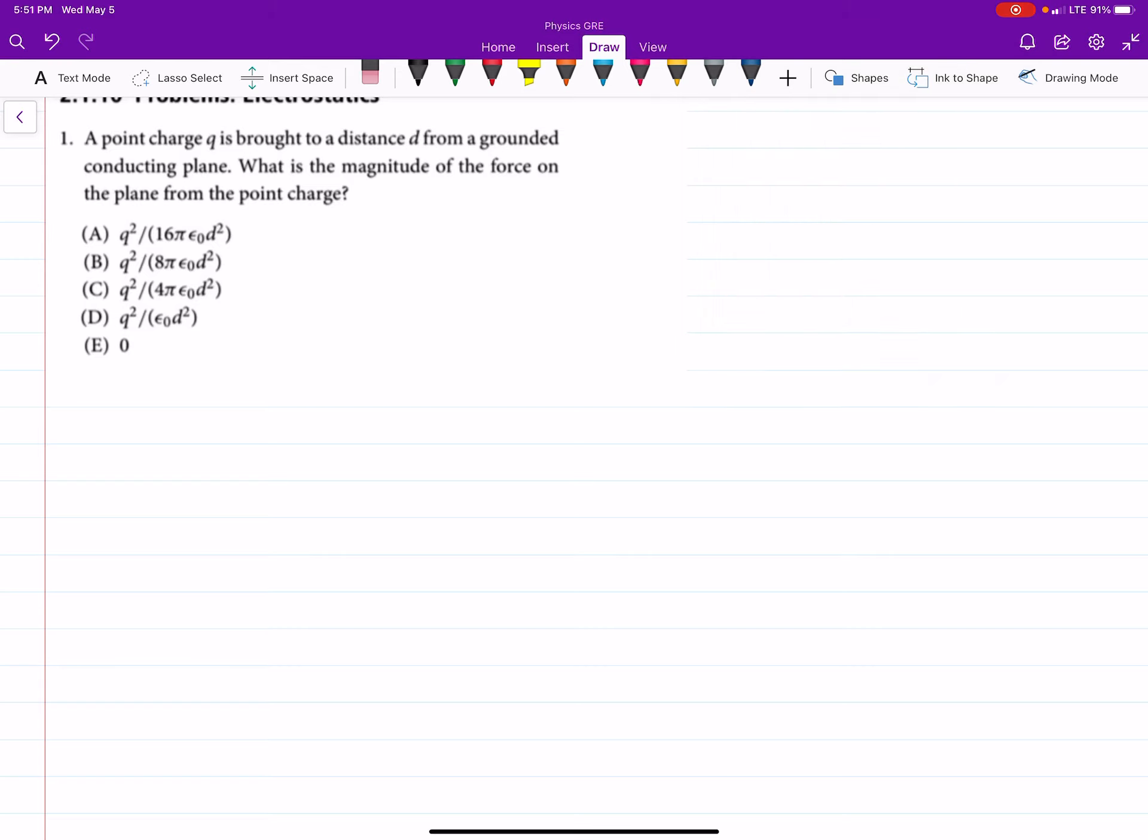So we have a conducting plane, that means the potential is zero for that plane, and a distance d above it, we have a point charge q.